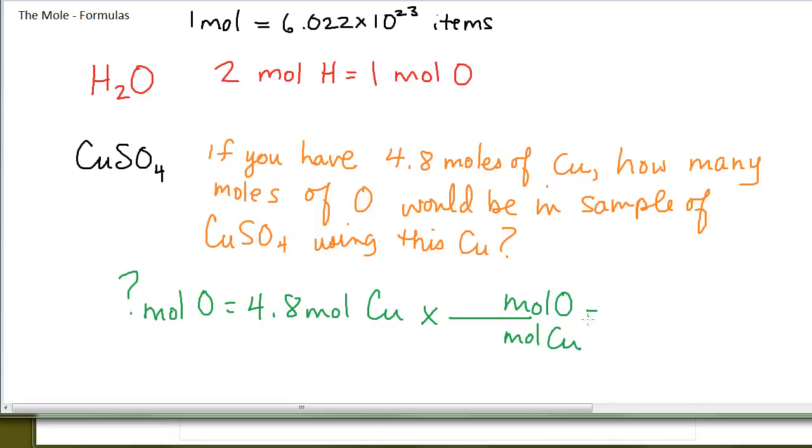My equivalence is the mole to mole ratio in this particular formula: one mole of Cu, four moles of oxygen. All I have left to do is punch it in my calculator. My calculator tells me the answer is 19.2. I'll round to the correct number of sig figs, so 19 moles of oxygen.